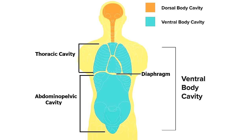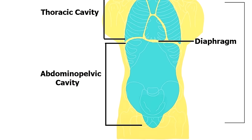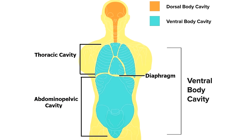The ventral cavity can also be divided into two main parts: the thoracic cavity and the abdominal pelvic cavity, which are separated by the diaphragm.